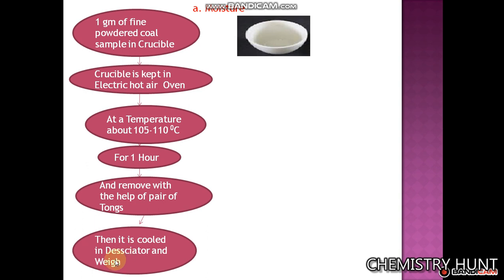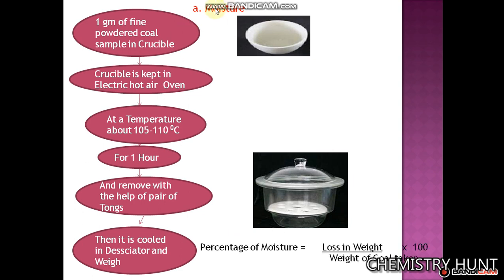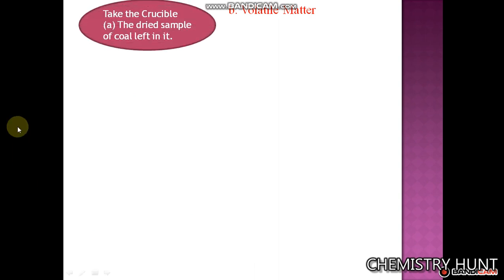The crucible is then cooled in a desiccator. Here we can see the desiccator where we keep the crucible to cool it. After cooling, we take the weight of it. The percentage of moisture is calculated as: loss in weight divided by weight of the coal sample, multiplied by 100. By this method we calculate the percentage of moisture.